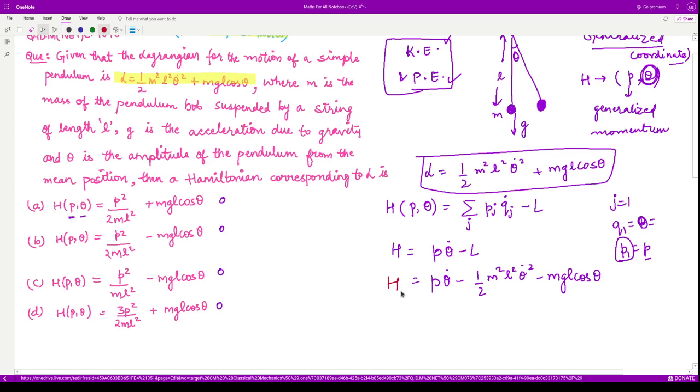From here, we have to eliminate this theta dot from here because in our options this theta dot is missing. So how can we do that? We can evaluate the expression for p. How can we do that? We have to partially differentiate l with respect to theta dot because we had this relation that p_j is equal to del l by del q_j dot.